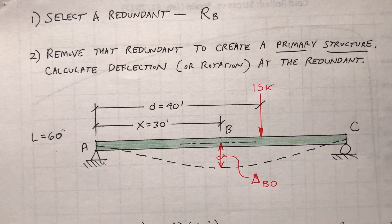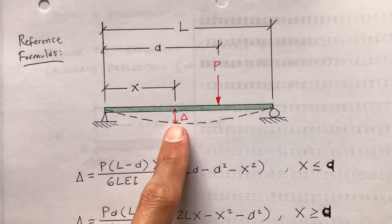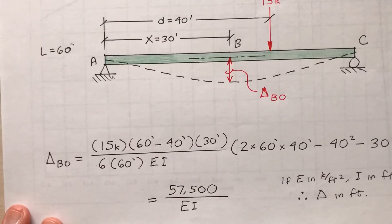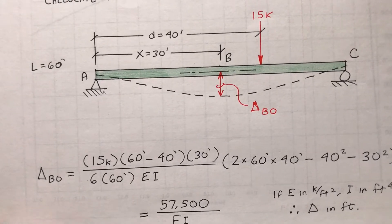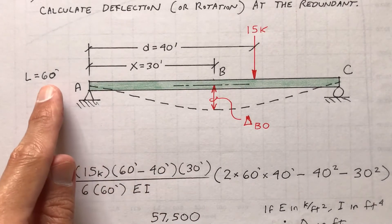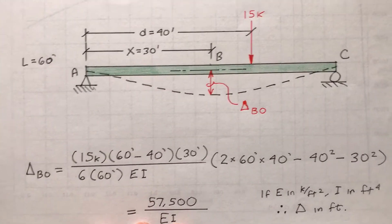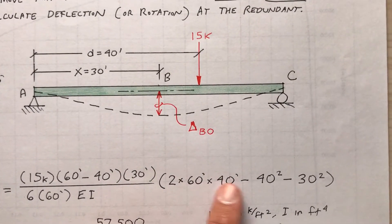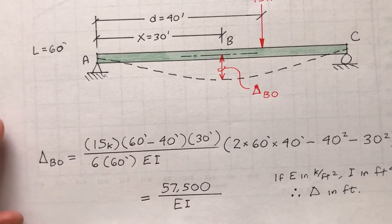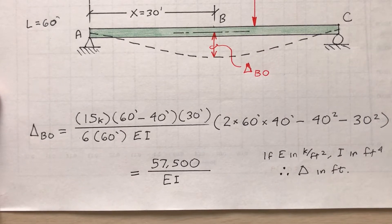How do I determine delta sub B zero? Remember those formulas from earlier. I'm interested in the deflection at point B. Using the first formula — delta sub B zero equals P times (L minus A) times x, times (2L·A minus A squared minus x squared), divided by 6·L·E·I. Here L is 60 feet, x is 30 feet (location of interest), and A is the load position. Simplifying, I get delta sub B zero equals 57,500 divided by EI. Be careful with units: E in kips per square foot, I in feet to the fourth, giving delta in feet, which you'd probably convert to inches.